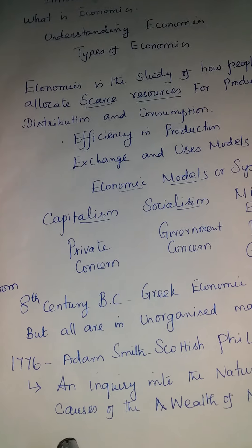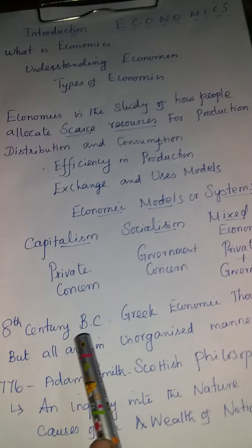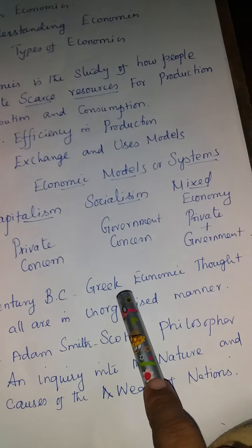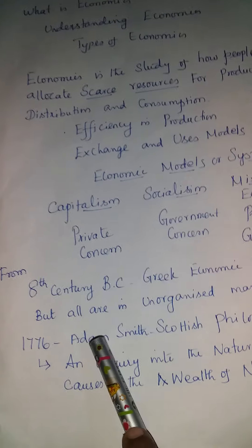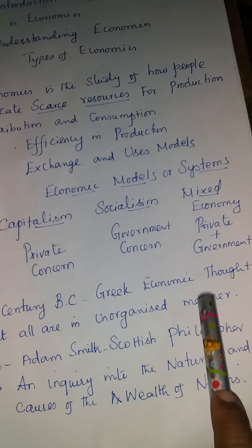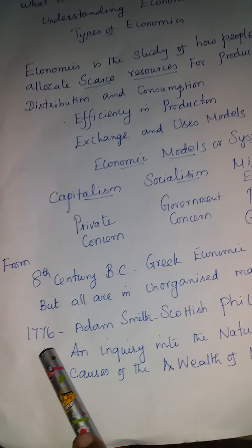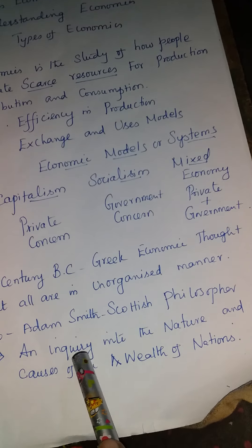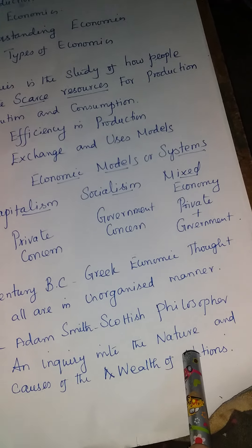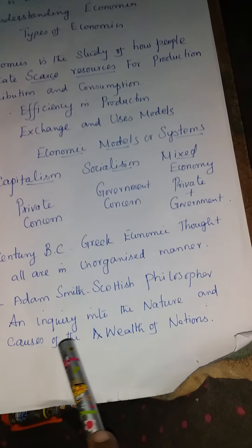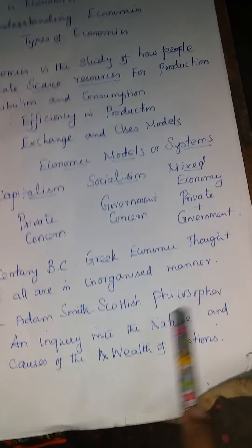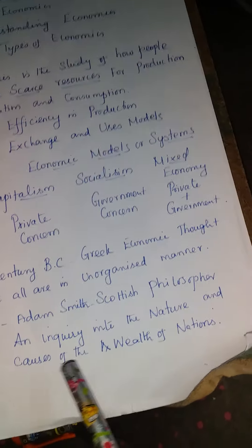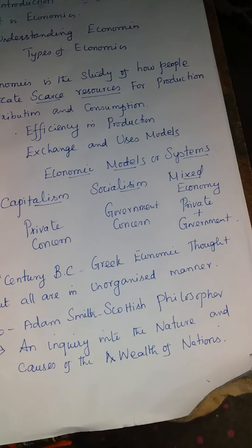If you look at the history of economics from the 8th century BC — now we are in AD — from the Greek economic thought, we had some economic thoughts, but all were in an unorganized manner. In the year 1776, Adam Smith, a Scottish philosopher, wrote a book: 'An Enquiry into the Nature and Causes of the Wealth of Nations.' He gave the definition that the study of the wealth of nations is called economics.